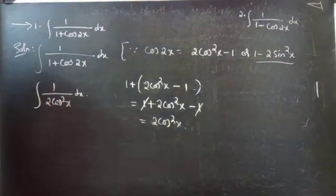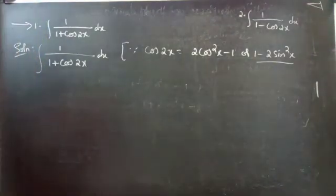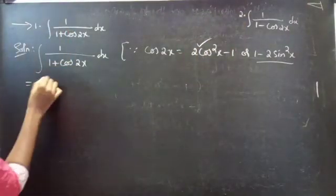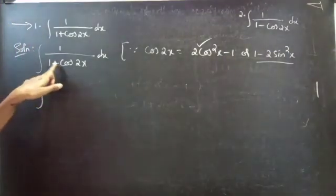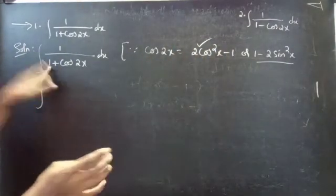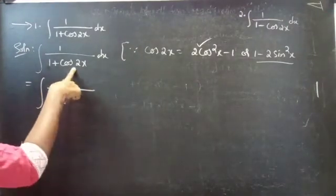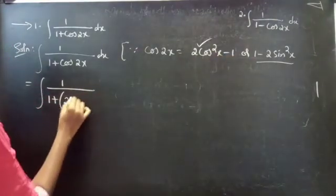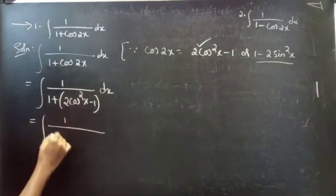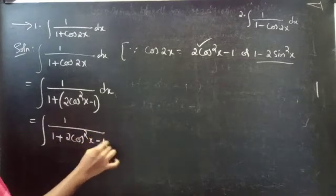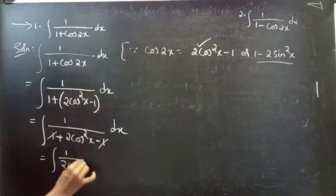Let's choose the formula cos2x = 2cos²x minus 1. Replacing cos2x in the integral: integral of 1/(1 + 2cos²x − 1) dx. Cancelling plus 1 and minus 1, this equals integral of 1/(2cos²x) dx.